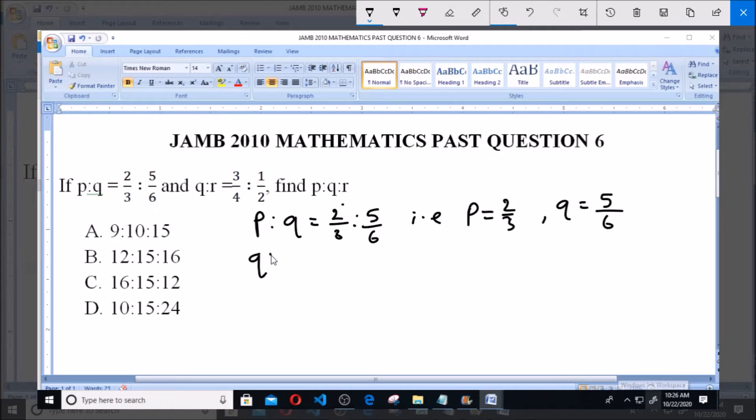The next one says q ratio r equals 3/4 ratio 1/2. That is, q equals 3/4 and r equals 1/2. Now looking at this, you see we have two values for q.